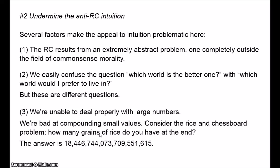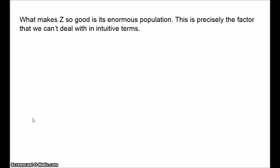And there are many other examples like this. We vastly underestimate just how quickly a very small value can become a very big one. What makes world Z so good is its enormous population. But this is precisely the factor that we can't comprehend, that we can't deal with in intuitive terms. When we think about world Z, especially when we compare it with A, we're able to consider the average welfare of each life. We can see that each life in A is significantly better than each life in Z. But we fail to appreciate the massive size of Z. Our intuitive reaction takes account of the average welfare, but it just can't take account of the different sizes of the populations.